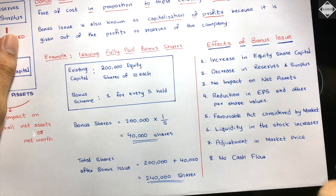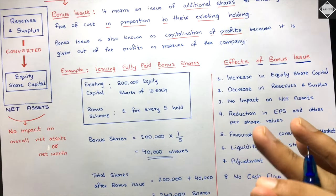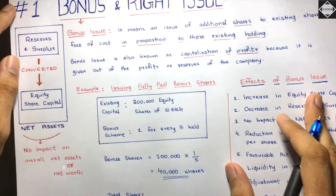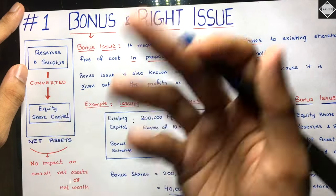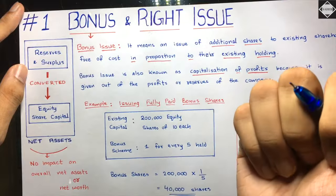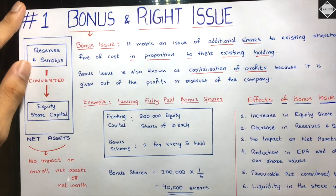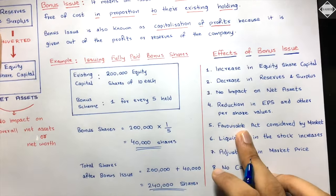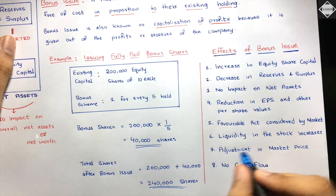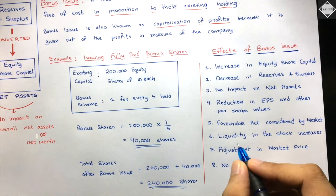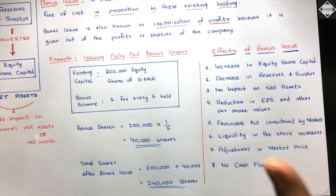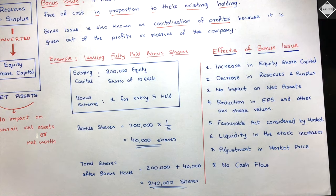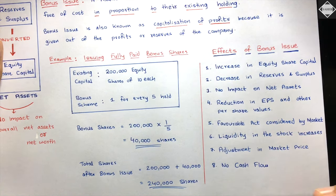The fifth effect: bonus issue is considered a favorable act by the market. It gives a perception that the company has lots of accumulated profits and reserves, which is why they're going for bonus issue. The sixth effect: liquidity in the stock increases - the volume of buying and selling in the stock market increases.